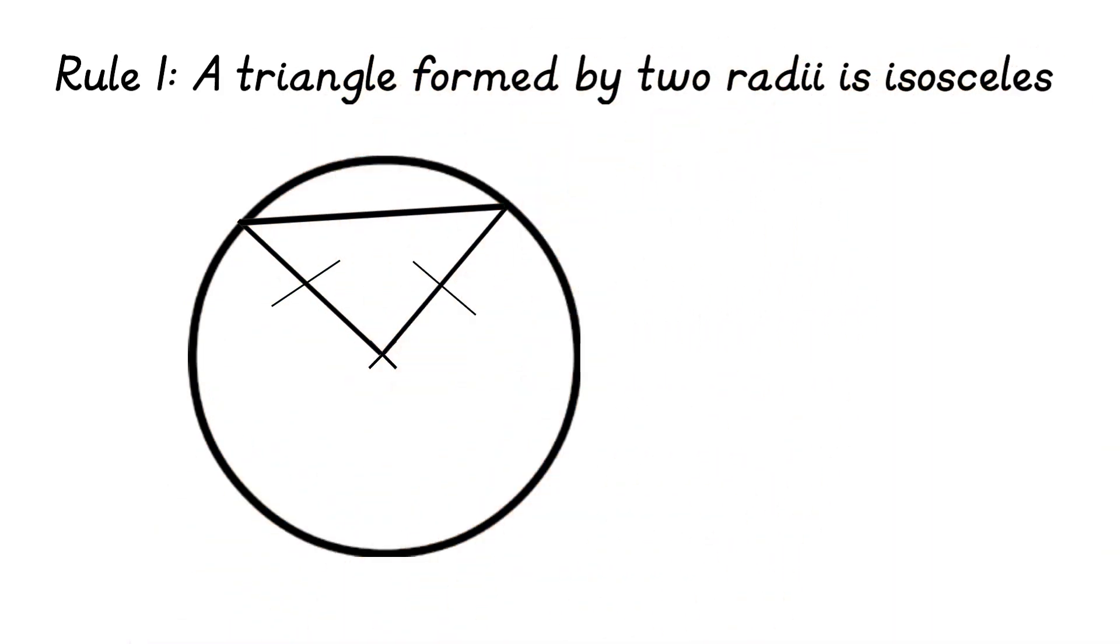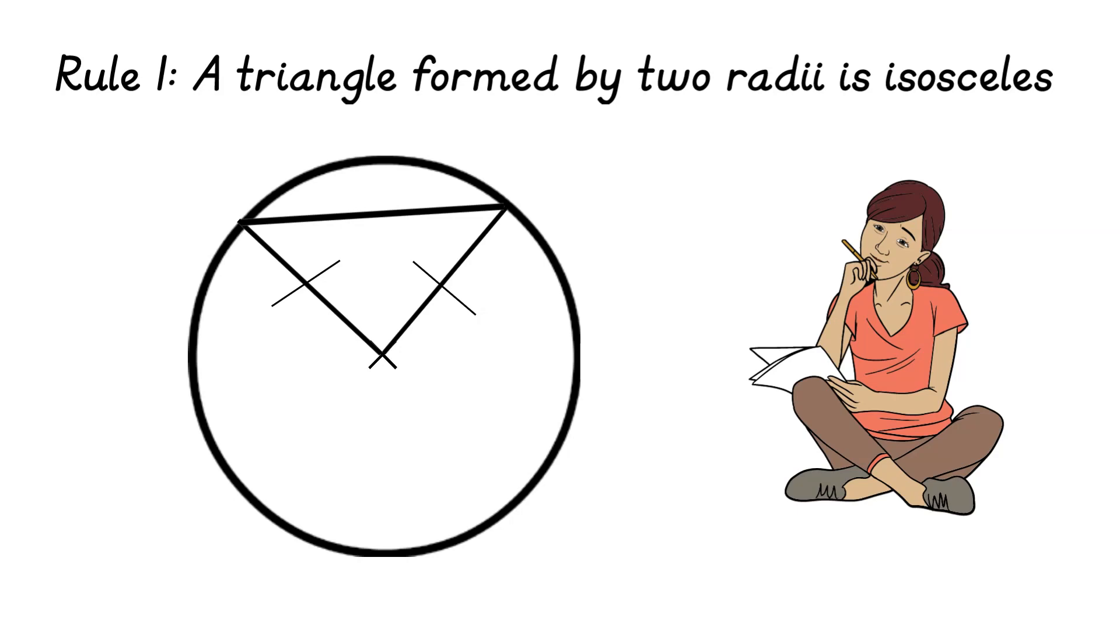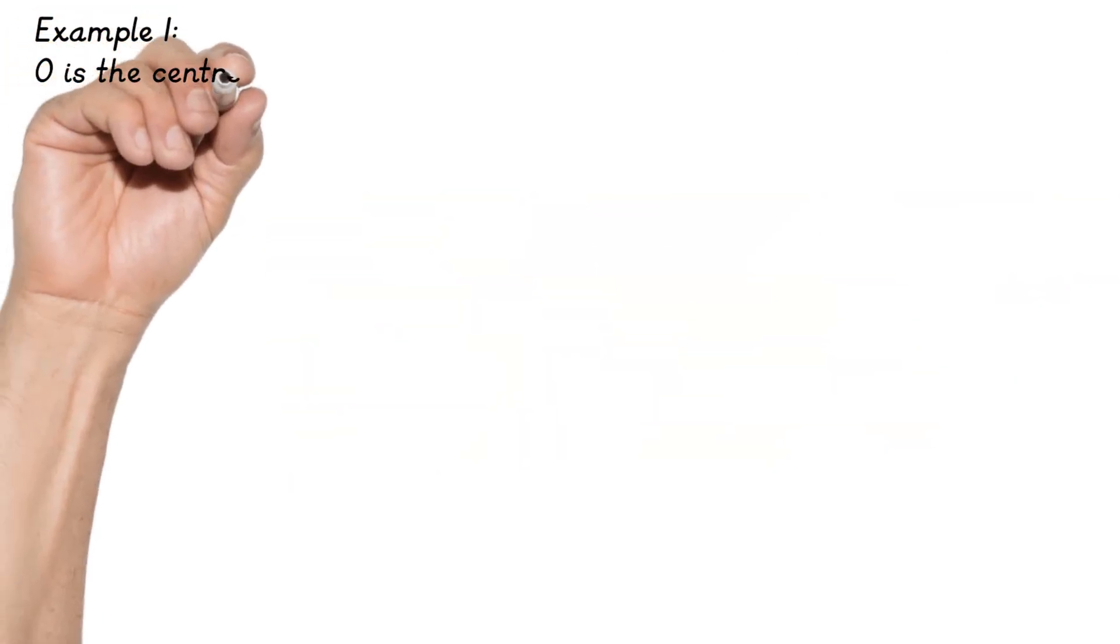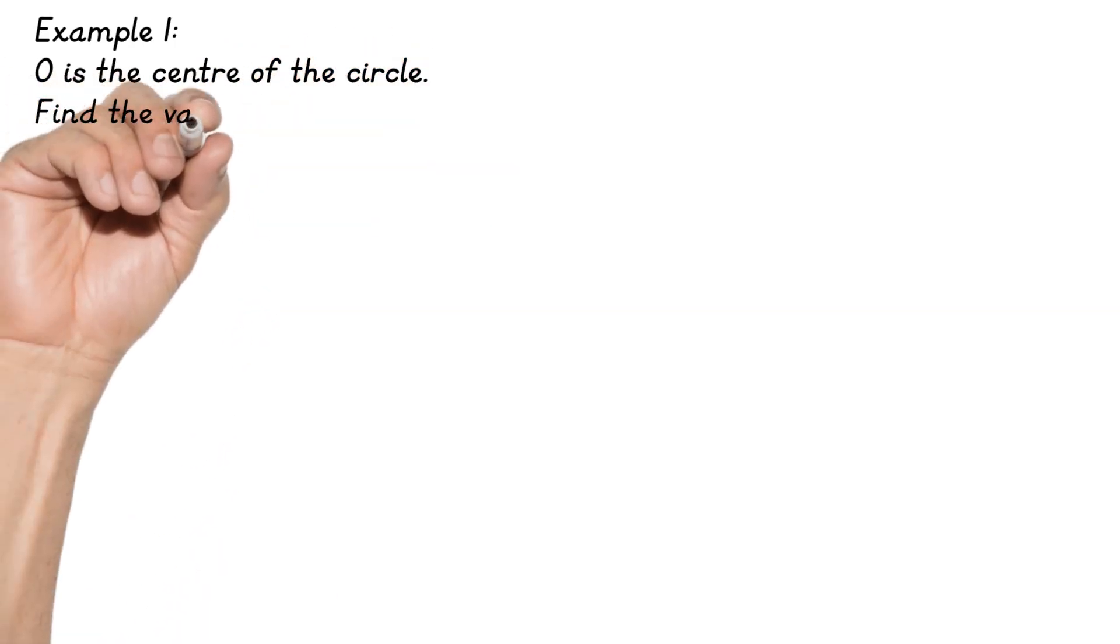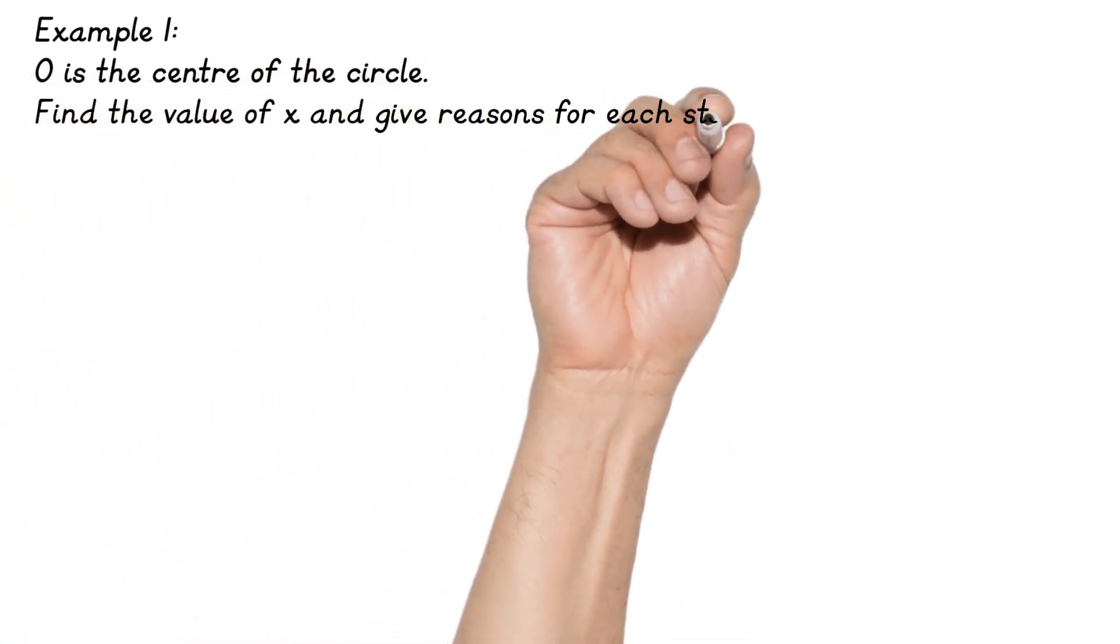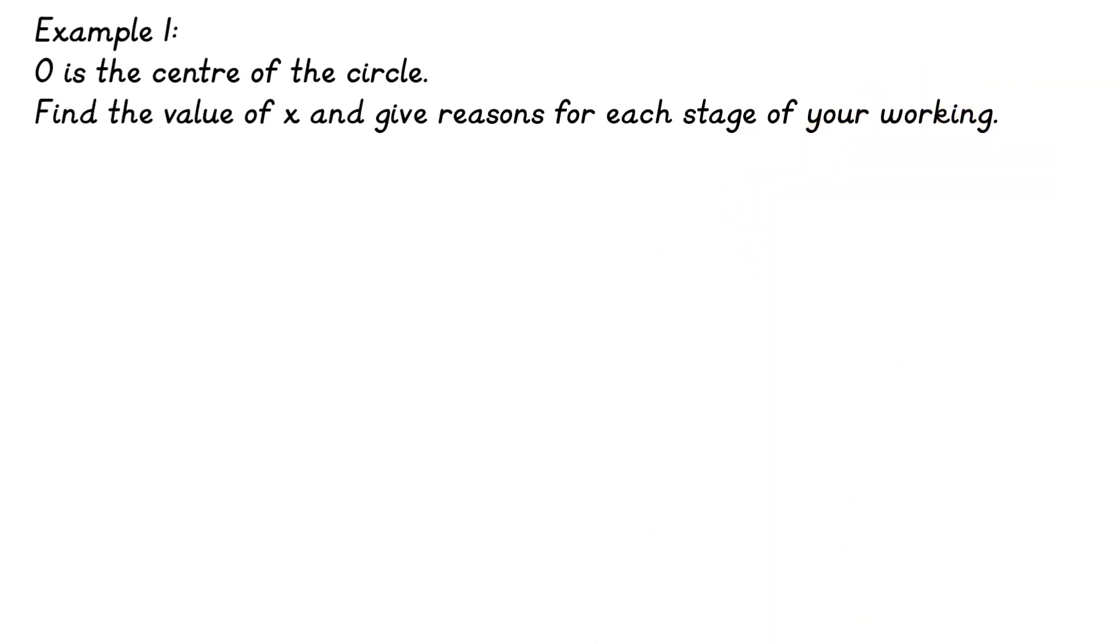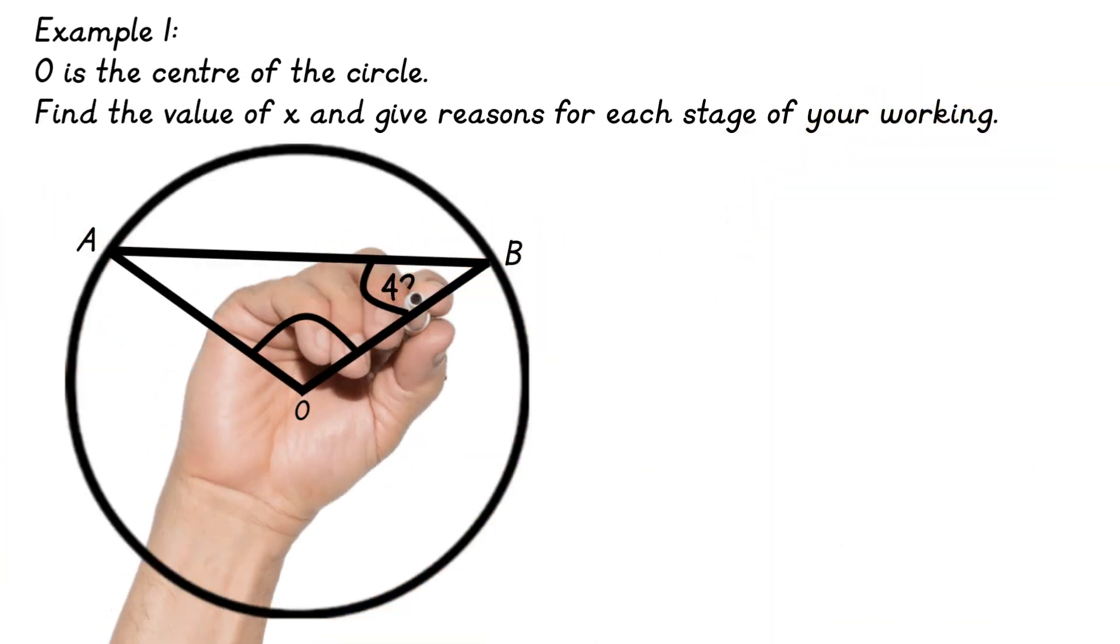So applying that to an exam question. O is the centre of the circle. It's really important that the exam question tells you that if it doesn't go through the centre some of these rules no longer apply so you need to be careful. Find the value of x and give reasons for each stage. So we have a chord AB and we have our radii AO and OB. So I can put my little arcs in there to show that AO and OB are the same and I've now created an isosceles triangle.